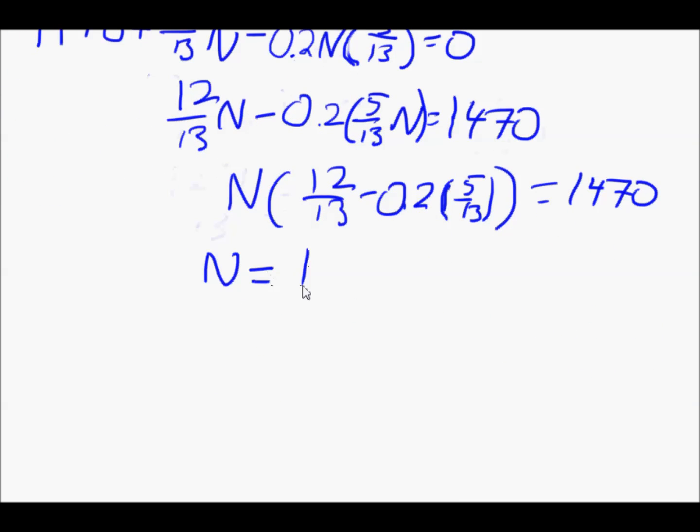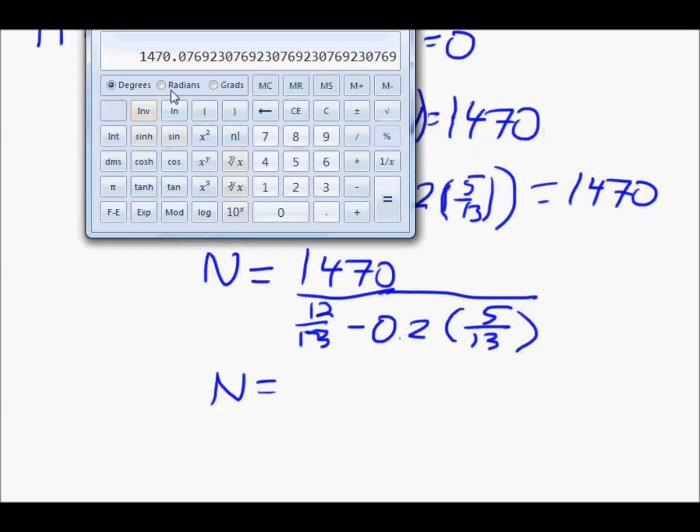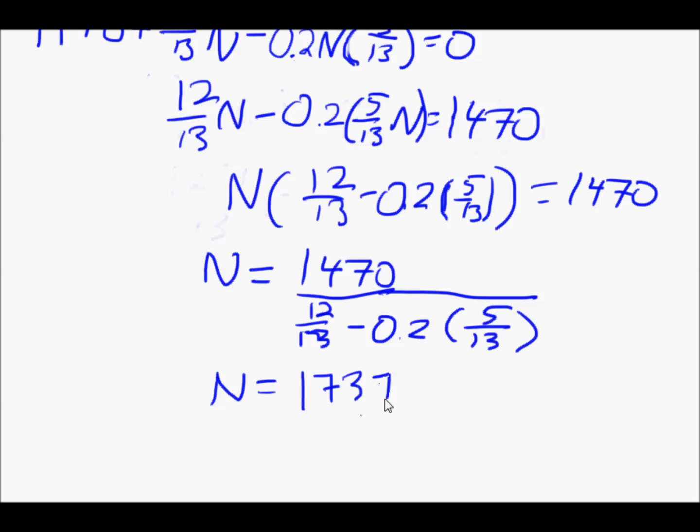I'll just write it out. N equals 1470 over, 12 over 13 minus 0.2 times 5 over 13. And I can do all of this in my calculator. 1470 divided by bracket 12 divided by 13 minus 0.2 times 5 divided by 13, close bracket, equals 1737. I'll just round it off to 1737 newtons.